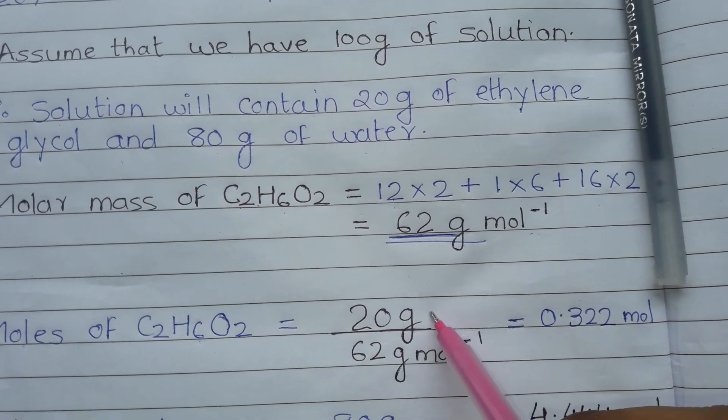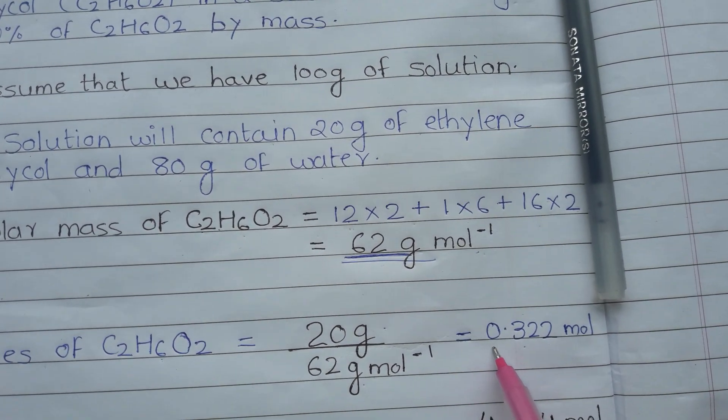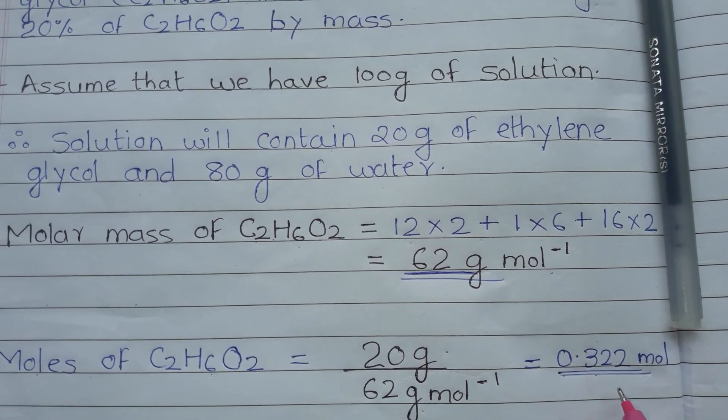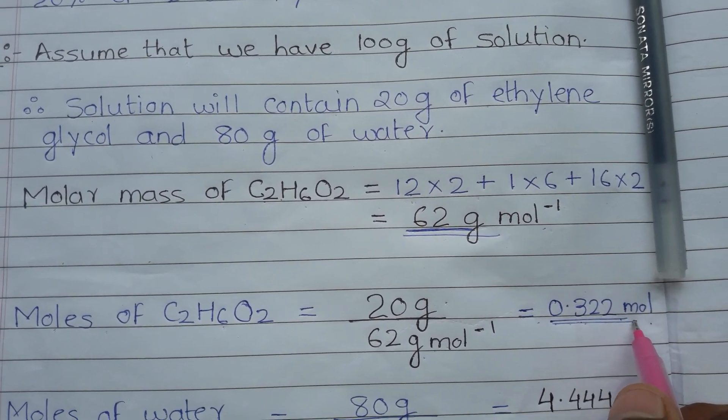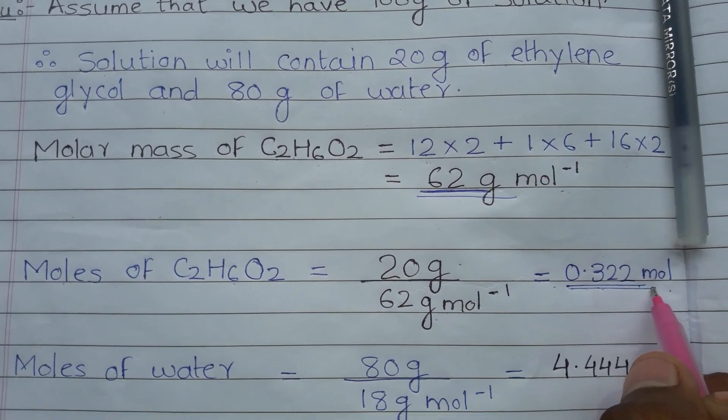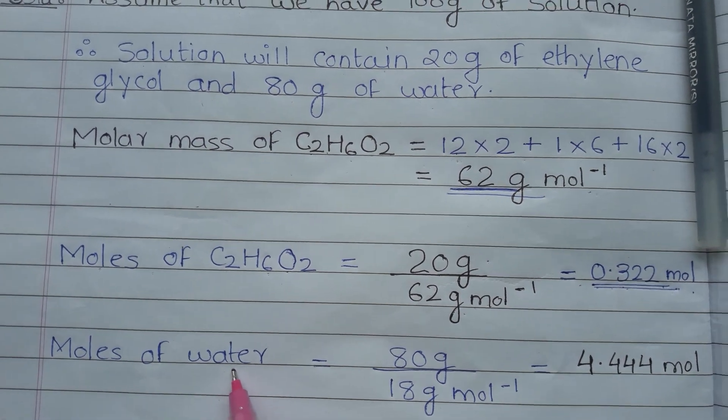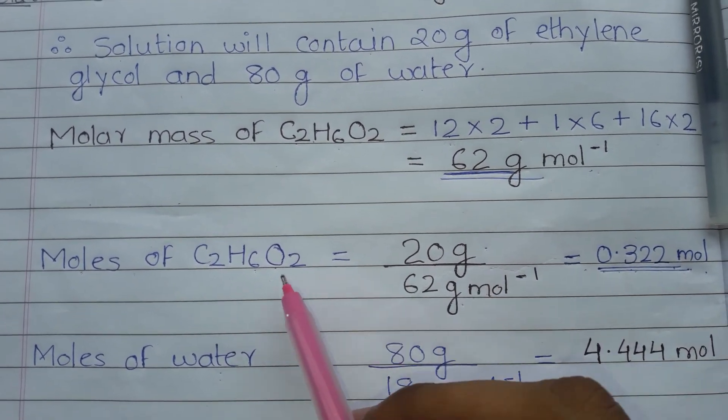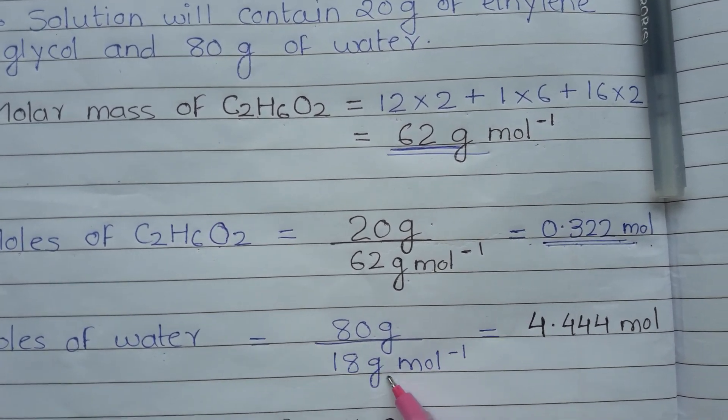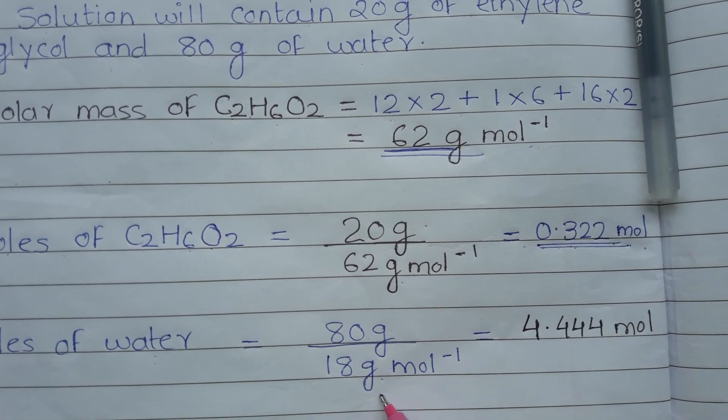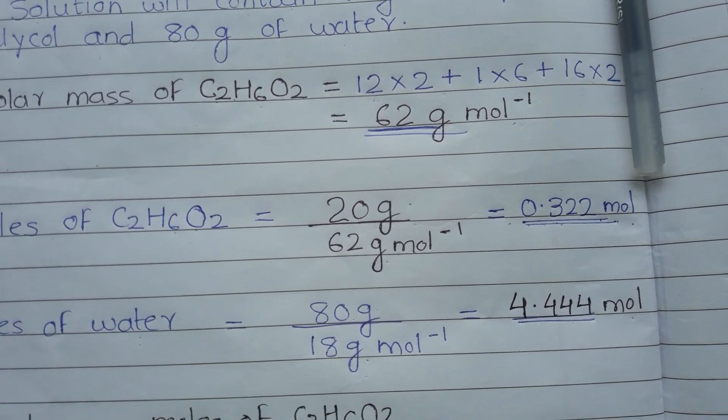Now we have ethylene glycol's molar mass. What do we do? We find out ethylene glycol moles. Moles of C2H6O2 equals 20g divided by 62 g/mol, which equals 0.322 mol. We also find out water moles. Since this is 20% solution, the remaining 80 grams will be water. 80g divided by water's molar mass 18 gives us 4.444 mol of water in the ethylene glycol solution.